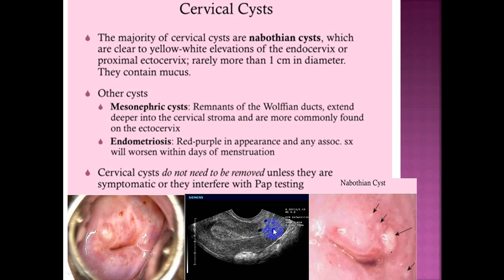Mesonephric cysts are remnants of Wolffian ducts that extend deeper into the cervical stroma and are more commonly found on the ectocervix. Endometriosis appears red-purple and any associated symptoms worsen within days of menstruation.